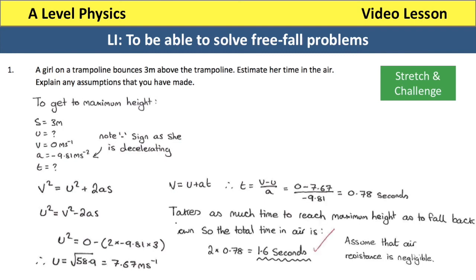It takes as long for her to get to maximum height as it does to return to the trampoline — the motion is symmetrical, so the time up equals the time coming down. We double 0.78 to reach a final answer of 1.6 seconds as the total time she is in the air. The assumption we have made is that air resistance is negligible.